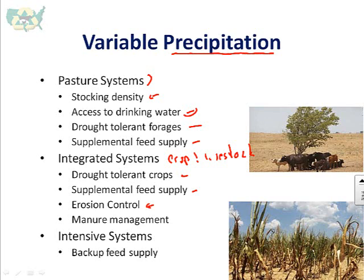Also as simple as manure management — looking at overtopping manure storage structures because of intensive rainfall events. Intensive systems are typically less affected by precipitation unless a large drought or flood impacts the feed supply, so looking at where feed comes from and ensuring multiple sources for the feed supply is important.